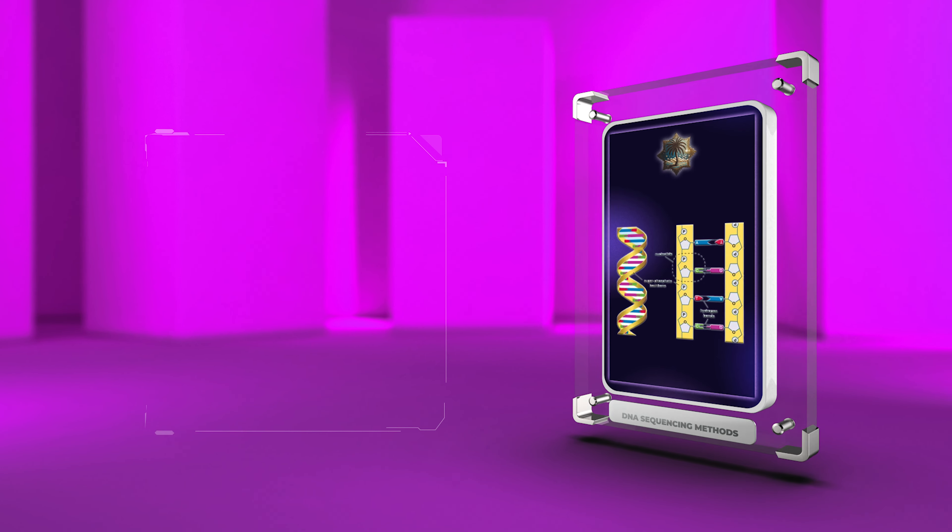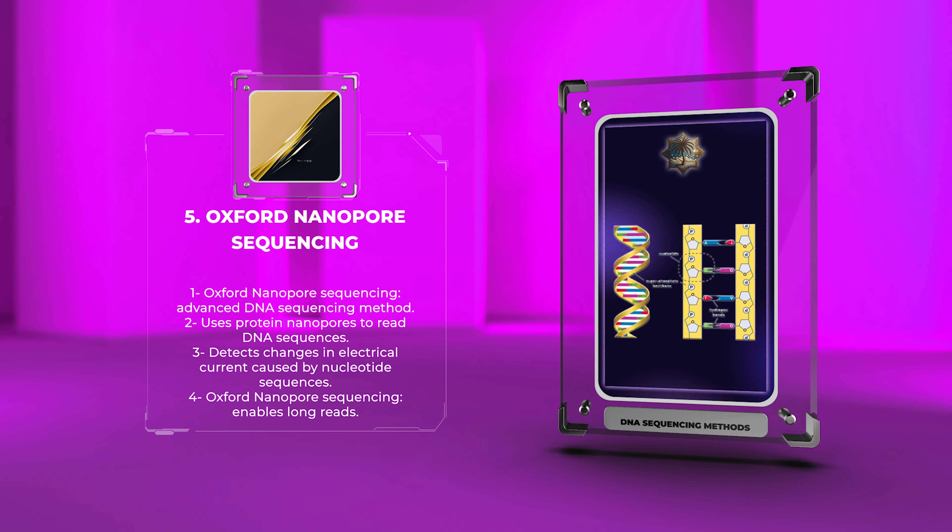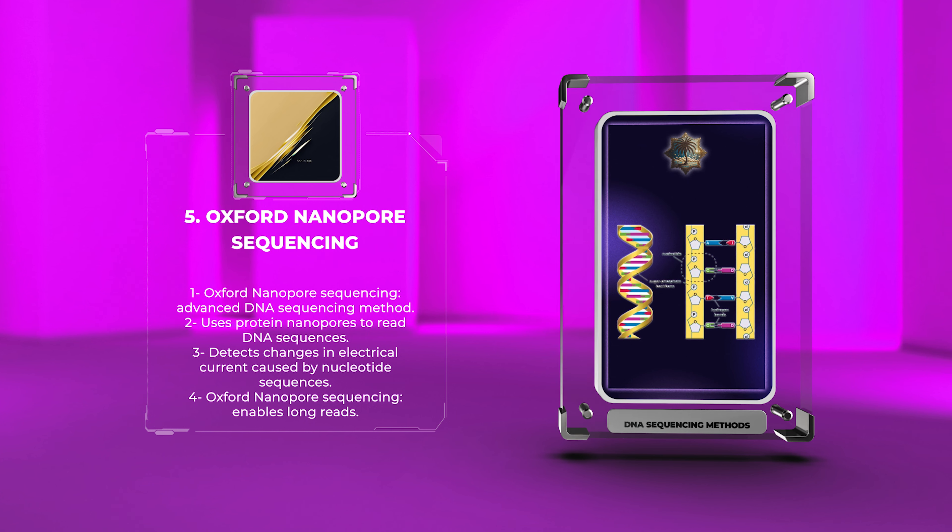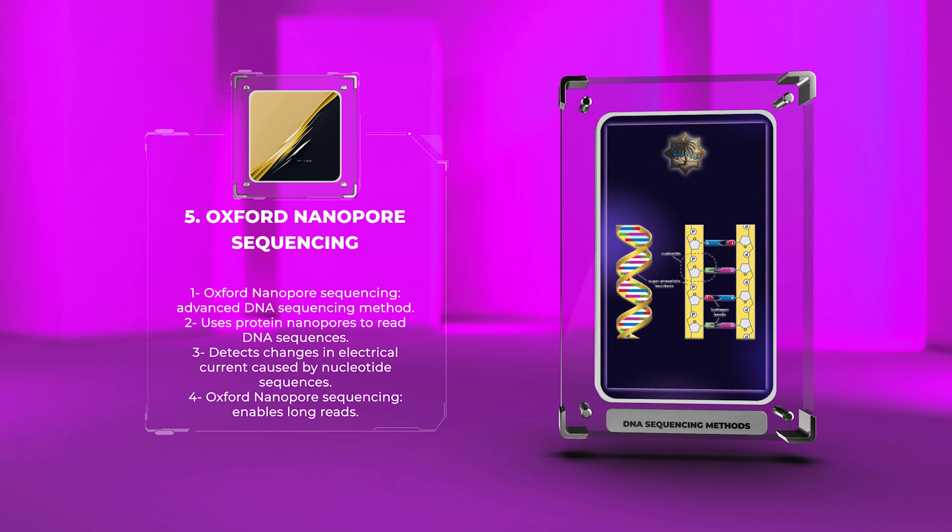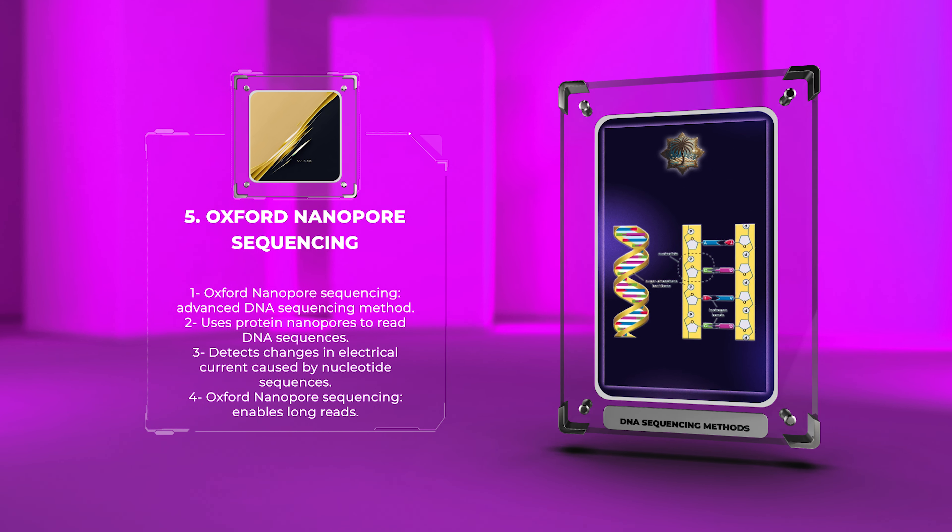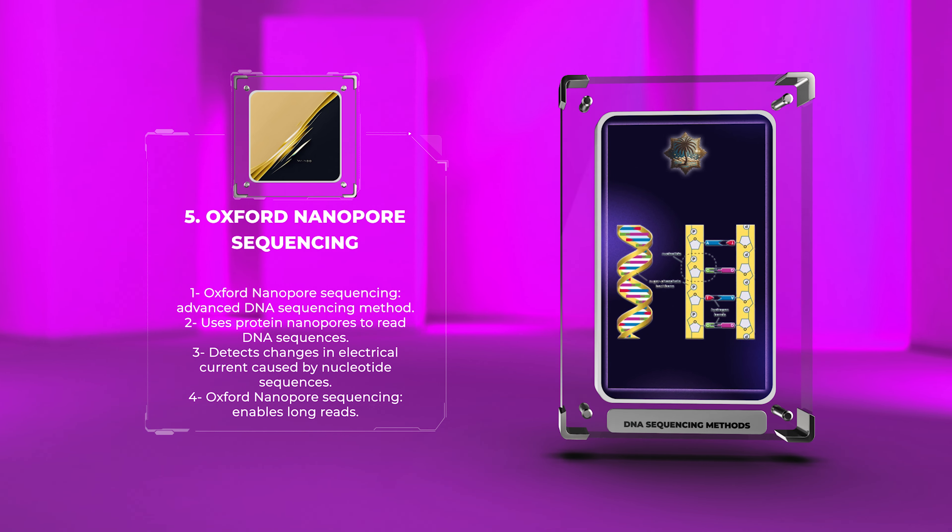Oxford Nanopore Sequencing is an advanced DNA sequencing method that uses protein nanopores to read DNA sequences. It detects changes in electrical current caused by nucleotide sequences, enabling long reads. This technique is widely used for metagenomics, infectious disease surveillance, and real-time DNA modification monitoring. Its portability and affordability make it popular in remote areas.